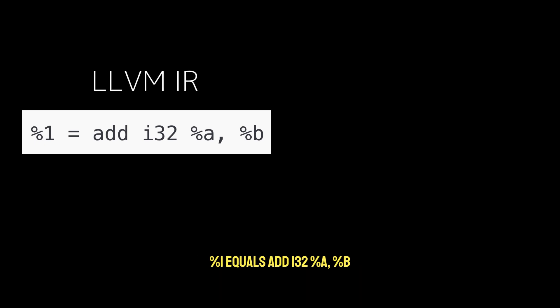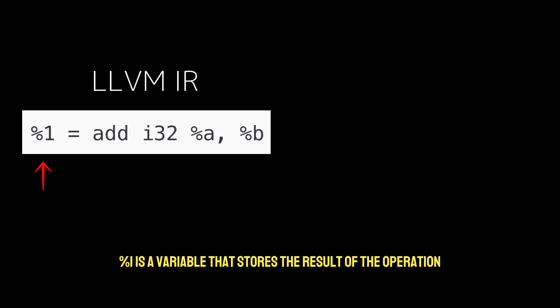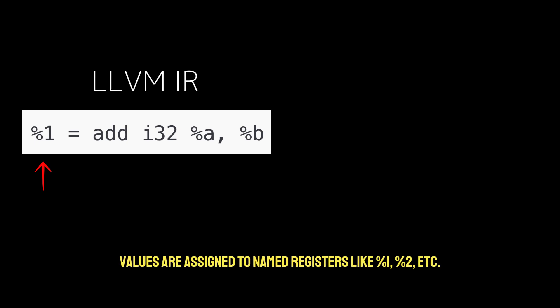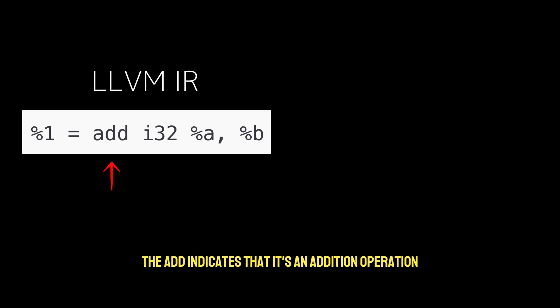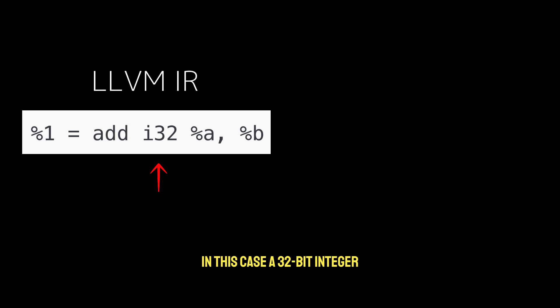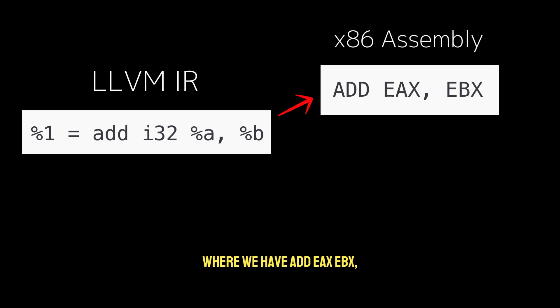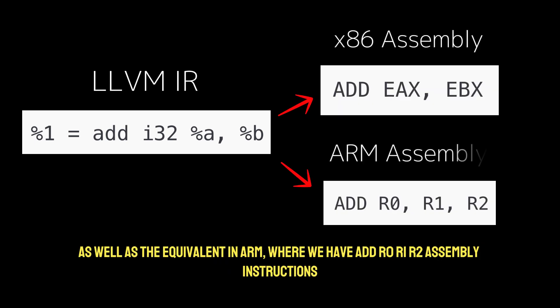Let's look at this LLVM IR statement: `%1 = add i32 %A, %B`. Here, %1 is a variable that stores the result of the operation — in LLVM IR, values are assigned to named registers like %1, %2, etc. The `add` indicates an addition operation, `i32` specifies a 32-bit integer data type, and %A and %B are the two 32-bit integer operands. The x86 equivalent is `add EAX, EBX`, and the ARM equivalent is `add R0, R1, R2`.